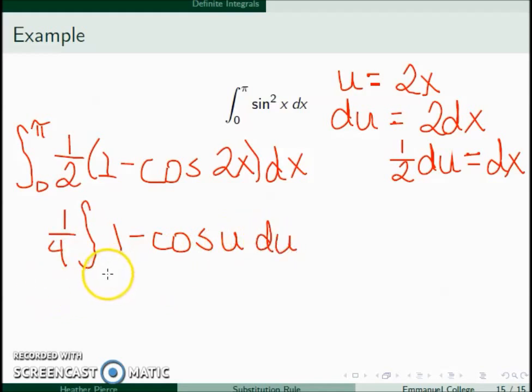For my limits of integration, if x is equal to 0, u is 0, and if x is equal to pi, I get 2x is 2 pi. So this is now 1 over 4 times u, and the integral of cosine is sine, so minus sine of u.